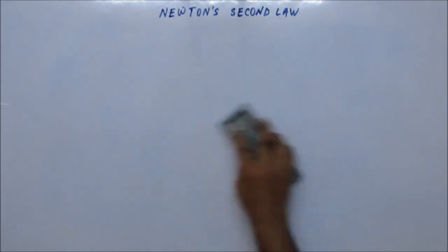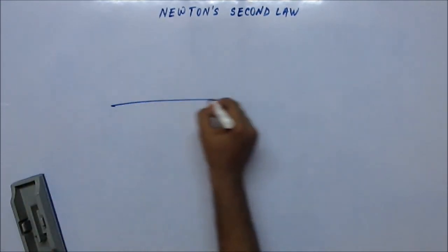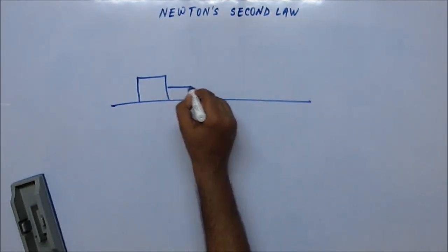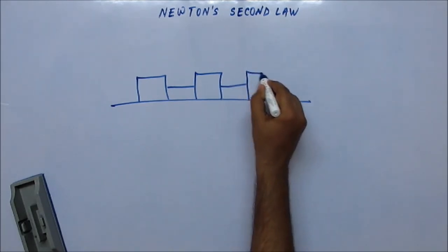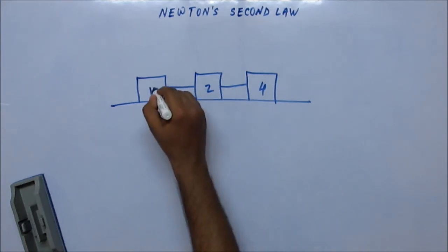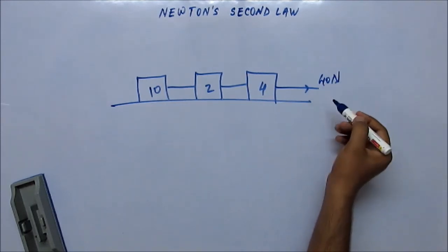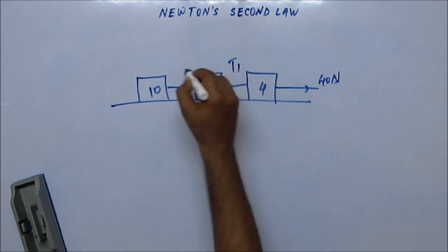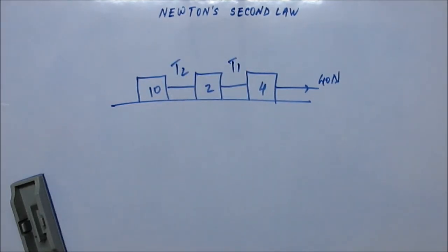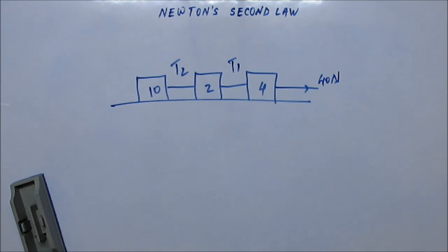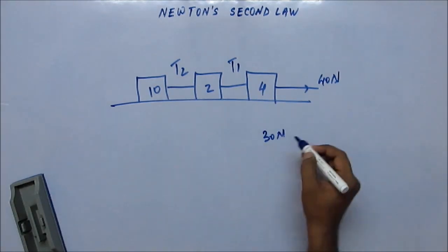Now here's a problem you should be able to solve just by looking at it. Suppose the applied force is 40 N — find tension T1 and tension T2. Try to use your brain without pen and paper. The value of T1 will be 30 N and the value of T2 will be 25 N.